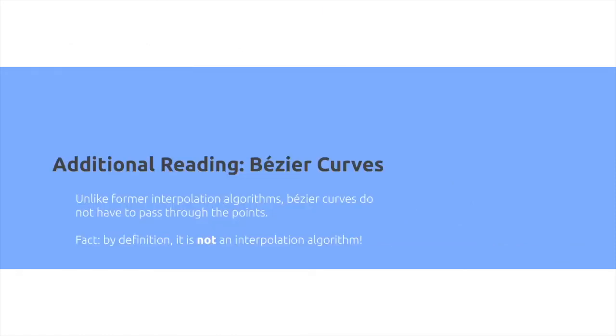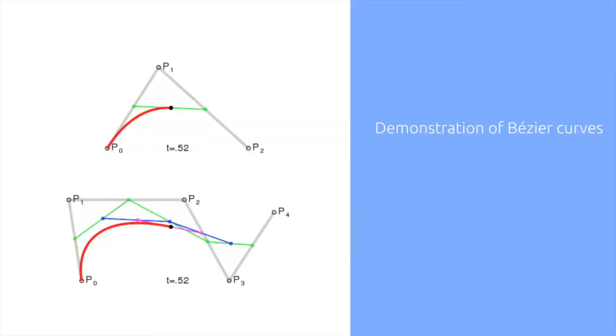Also, for additional reading, you can learn about Bezier curves. So unlike interpolation algorithms, Bezier curves do not have to pass through the points. In fact, by definition, it's not considered an interpolation algorithm. So here's a simple demonstration of Bezier curves. If you're interested and want to read more, there's a link in the description.